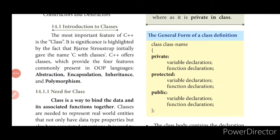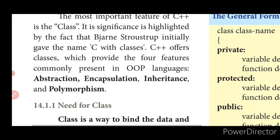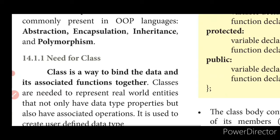In C++, abstraction, encapsulation, inheritance, and polymorphism are the four main features. Abstraction is dealing with the essential thing and leaving out what is not wanted at that time. Encapsulation is binding of data and functions together into a single unit. Inheritance is deriving the properties of the base class to the derived class. Polymorphism is the ability to take more than one form.